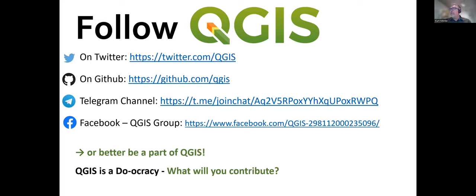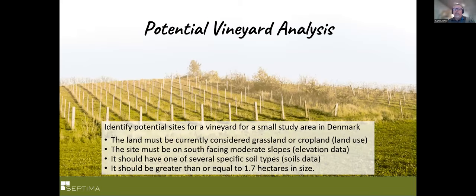That's a brief introduction to QGIS and the community. Now I'm going to segue into a short case study — an example of doing an analysis in QGIS. We're going to look for a potential site for a vineyard near where I live in Denmark. With a site selection analysis, you usually have several criteria. Here, the land has to be currently considered grassland or cropland, on a south-facing moderate slope, have one of several specific soil types, and be at least 1.7 hectares in size. We're going to run through a quick analysis of how that would be done.